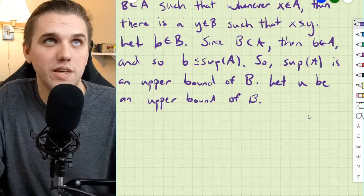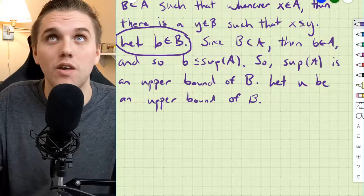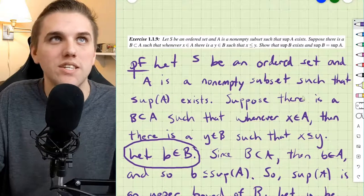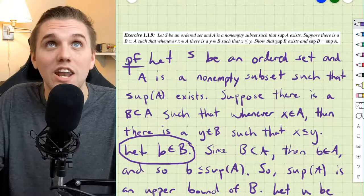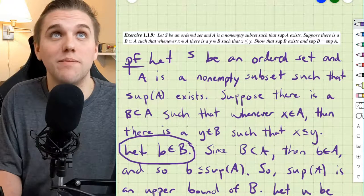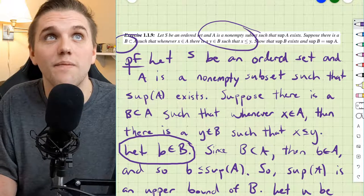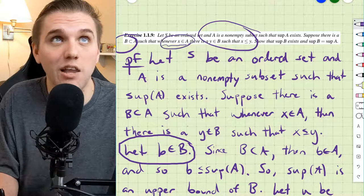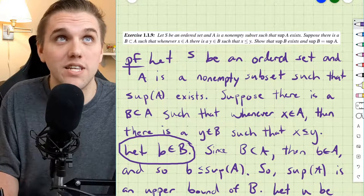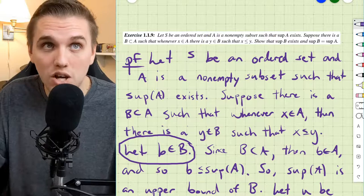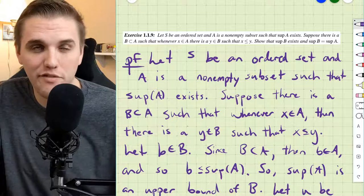Now I want to clarify something: why was I able to assume there is an element in B? Do we get to assume B is non-empty? Not necessarily. But I know that A is non-empty and B is a subset of A such that whenever you have an element in A, then you have an element in B. So since A is not empty, that means there is an element in B, which means B is also non-empty — which allows me to grab an element from B. I should have clarified that earlier.